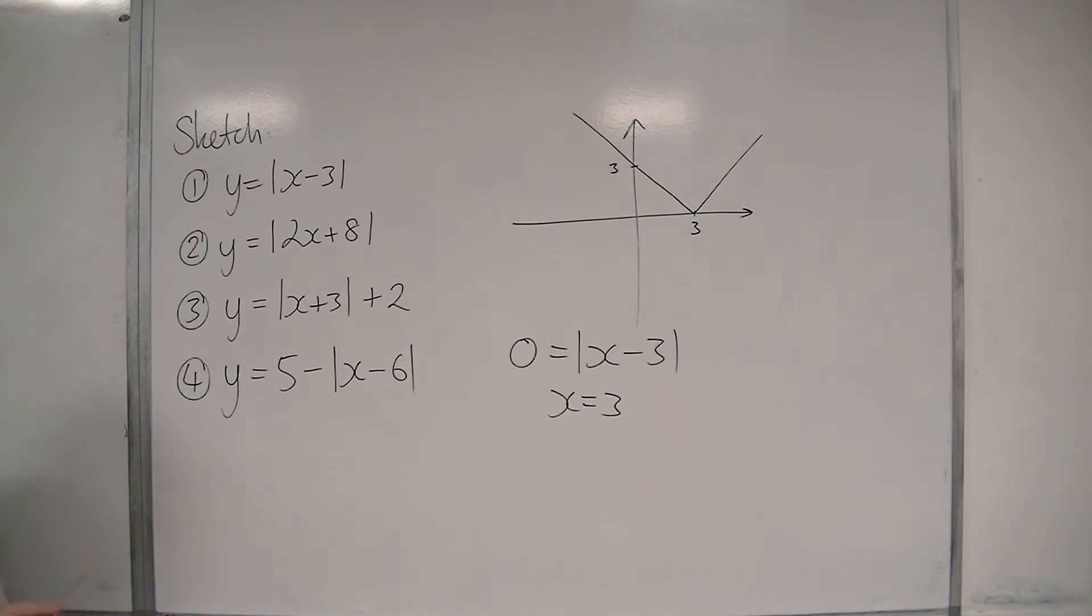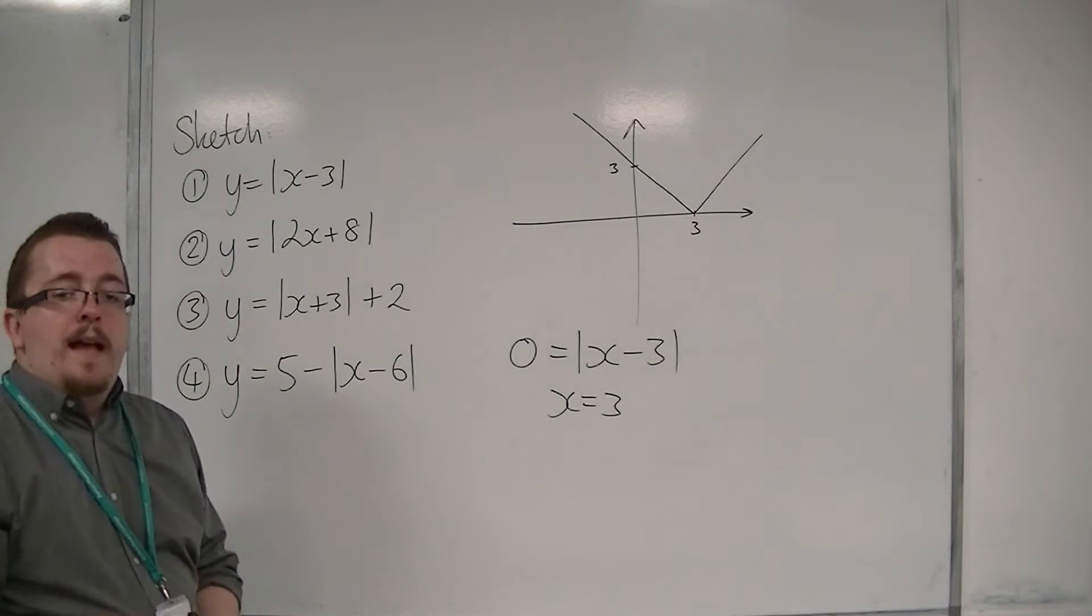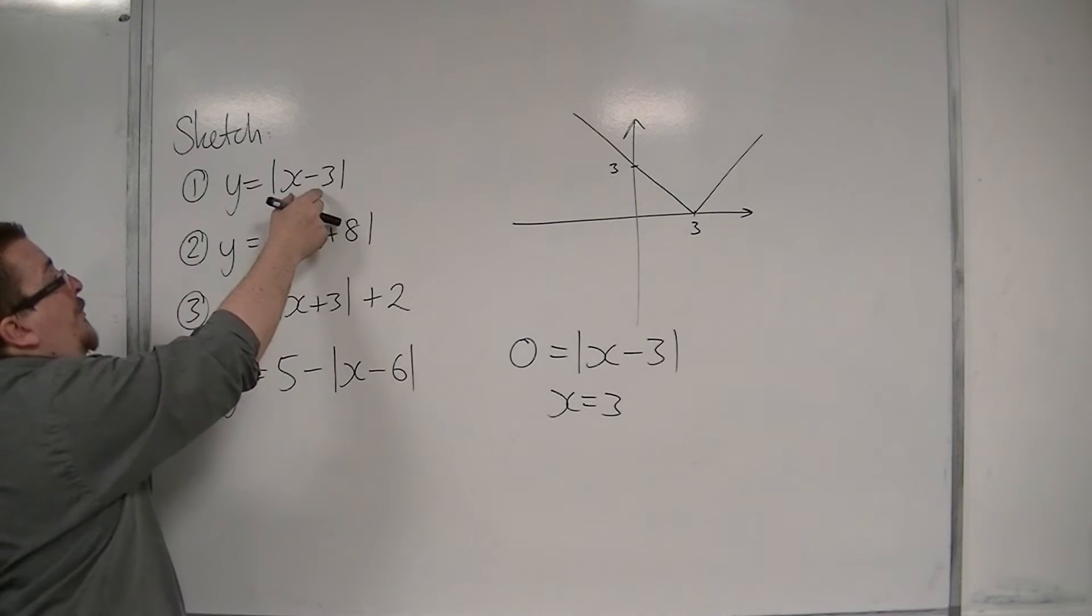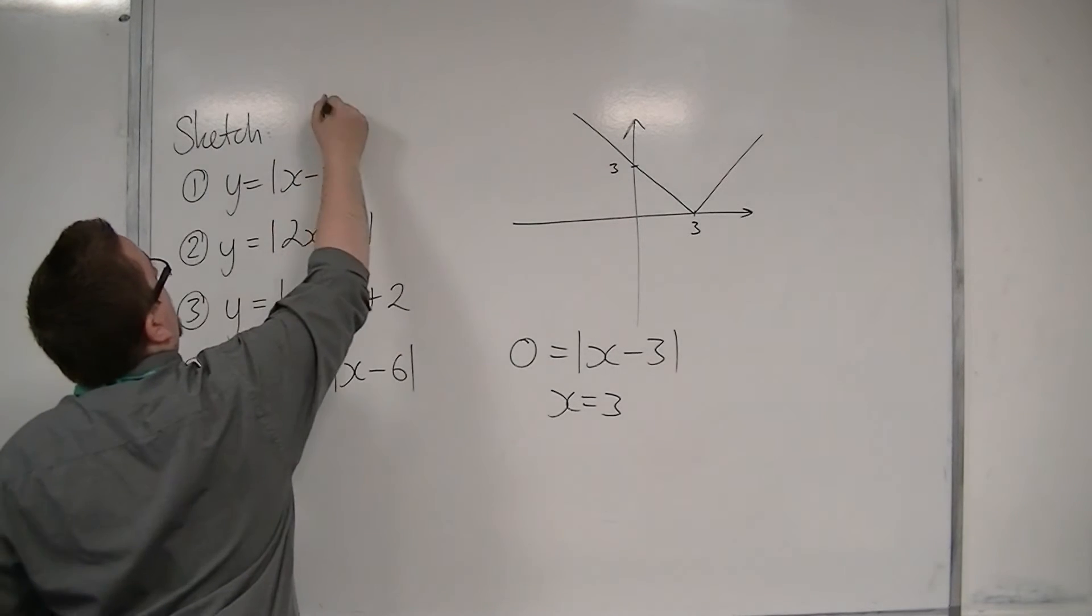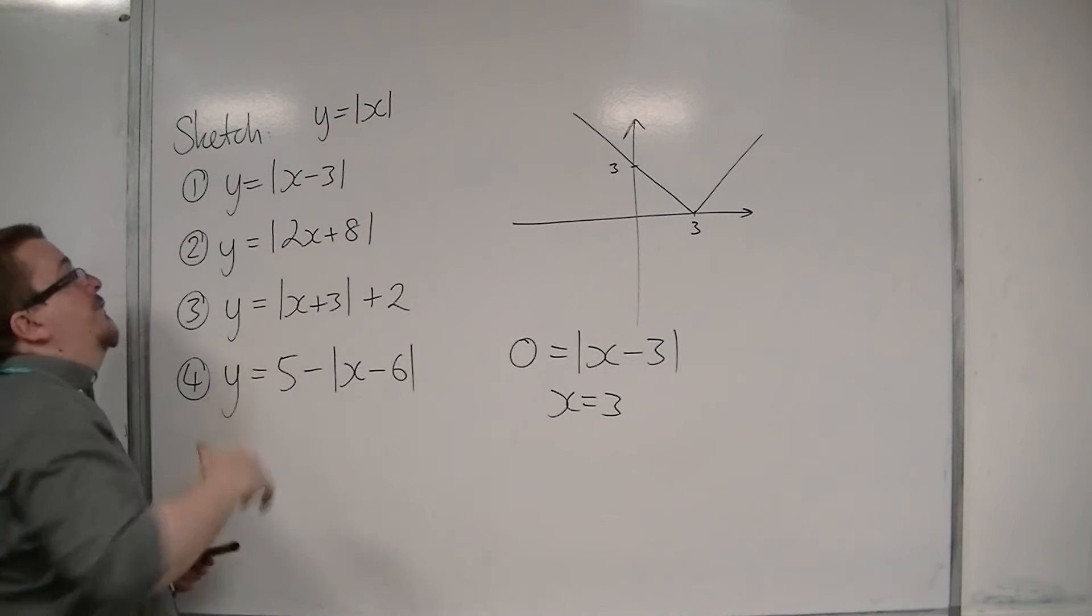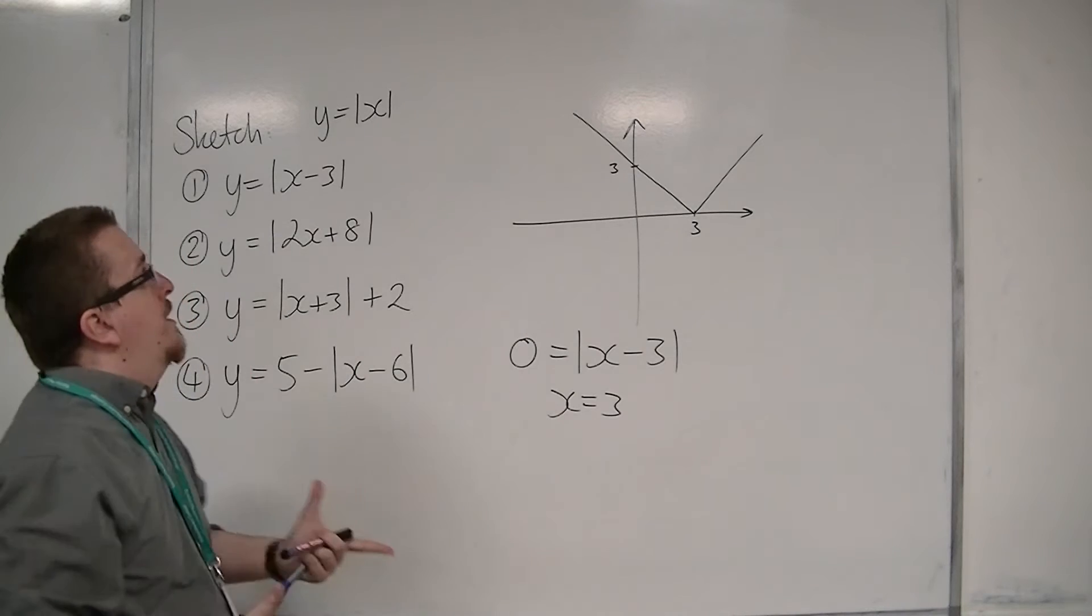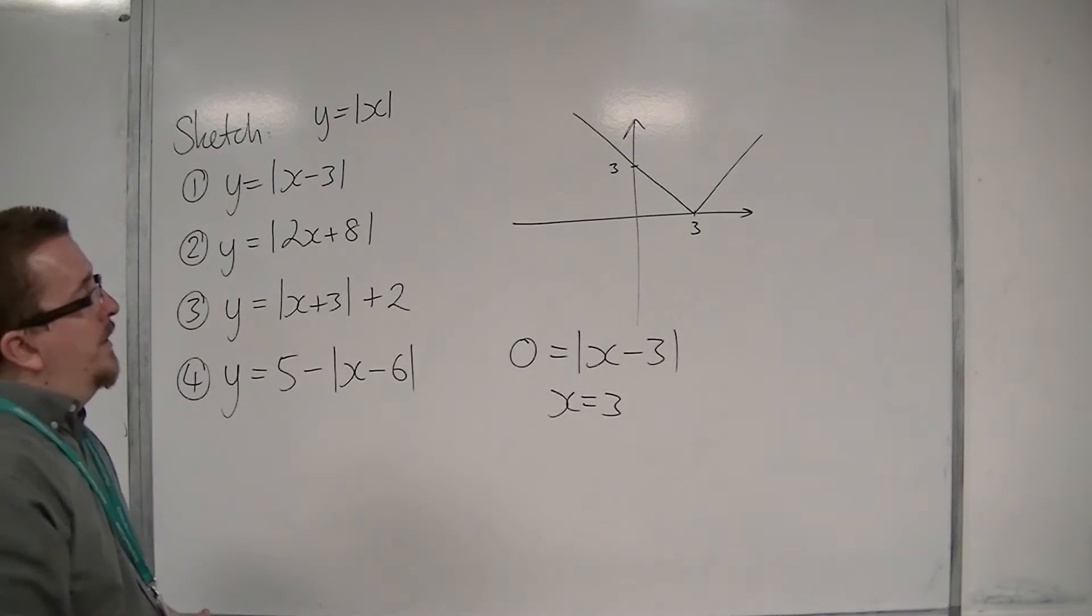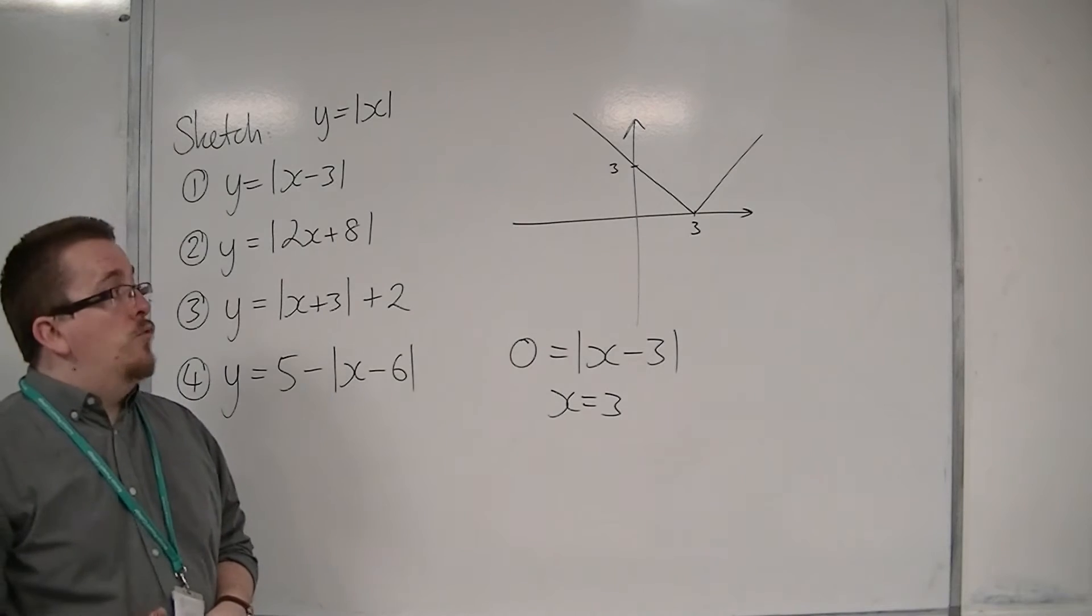So that's y equals mod x minus 3, and it should look like that because this would also be a translation of the vector of the original modulus graph, y equals mod x. So it translates it 3 to the right.